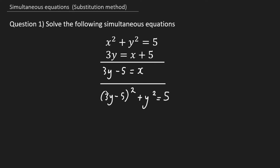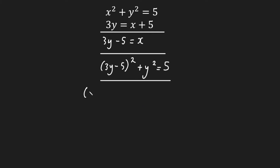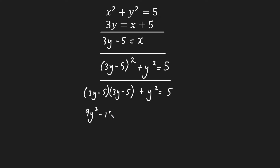Your third step is to expand and simplify. So I'm going to have (3y − 5)(3y − 5) + y² = 5. Expanding this gives me 9y² − 15y − 15y + 25, plus y², which equals 5.